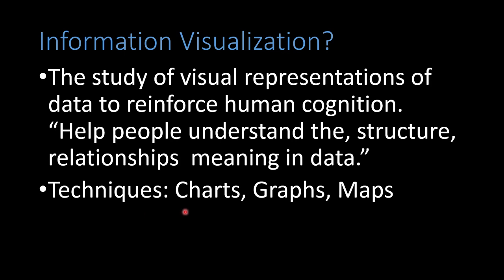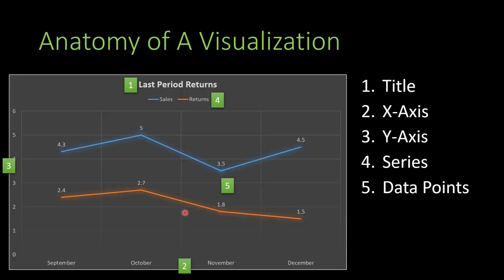What parts does a visualization have, and which is the best visualization to choose? Let's start by looking at the parts of any visualization. Visualizations have a title, usually at the top, and then they usually will have at least two axes: an x-axis on the bottom and a y-axis on the side.